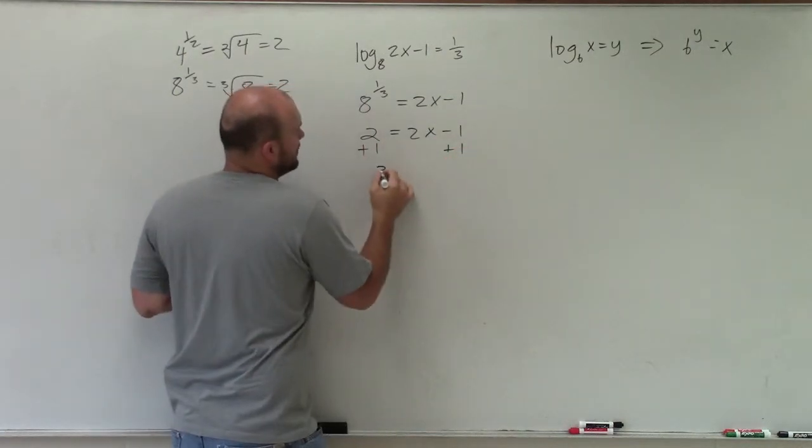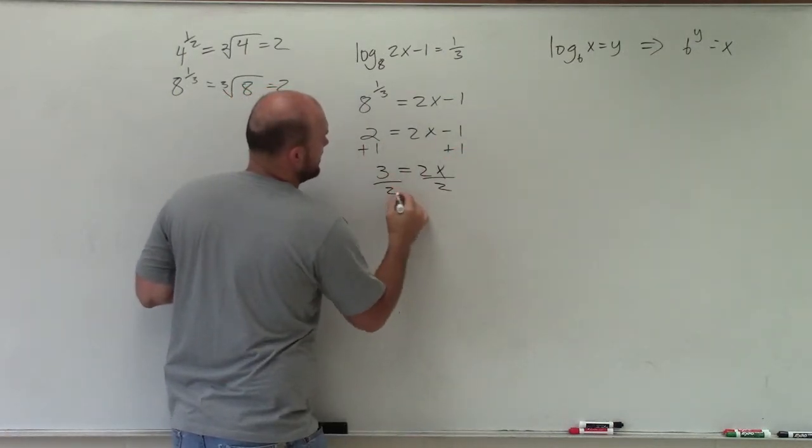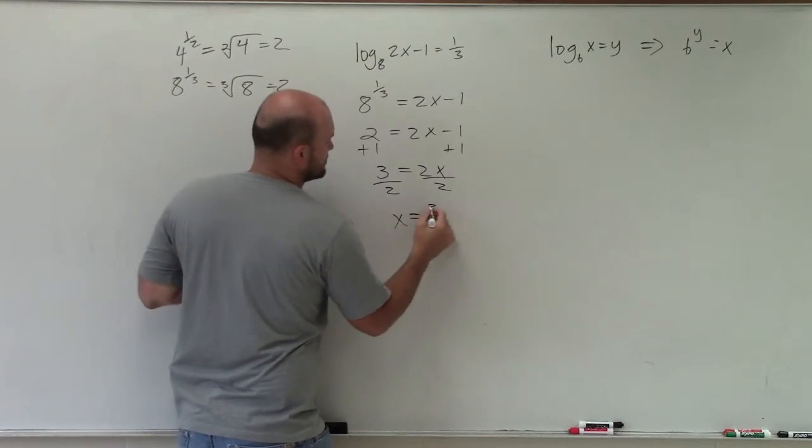Add 1 to both sides: 3 equals 2x. Divide by 2: x equals 3/2.